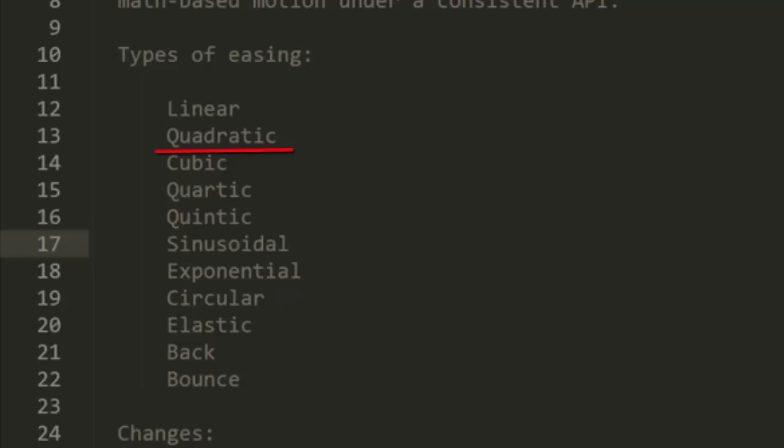We'll start out looking at the quad family, ease-in-quad, ease-out-quad, and ease-in-out-quad. And we'll cover a little bit on the cubic, quart, and quint tweens as well.